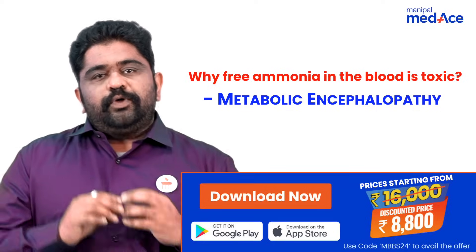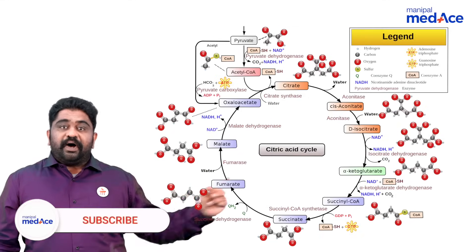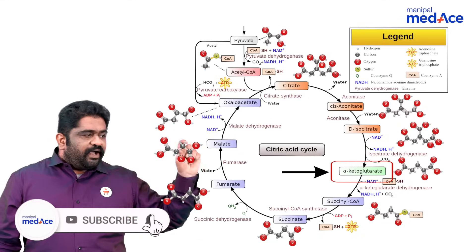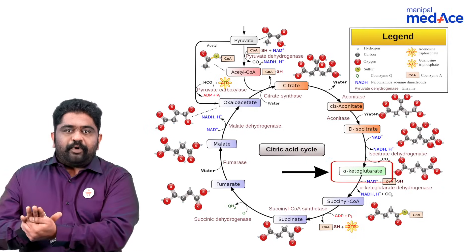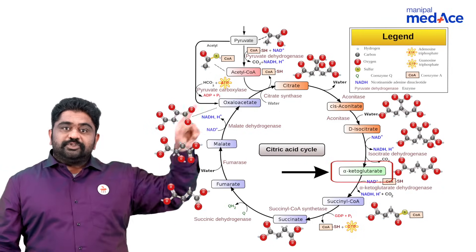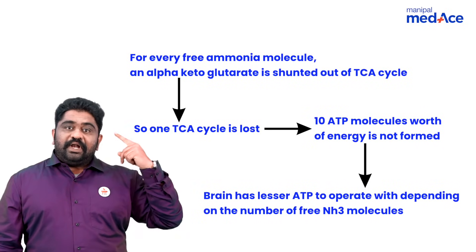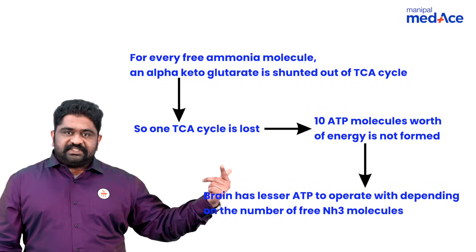Why? Imagine if there is one free ammonia molecule — you have to use an alpha-ketoglutarate to trap it as glutamate. Now alpha-ketoglutarate is a part of a bigger important cycle called the TCA cycle. Every time you remove alpha-ketoglutarate to trap ammonia, one TCA cycle comes to a dramatic halt. If it happens in the brain, the brain will have depletion of ATP that is supposed to come from the TCA cycle.